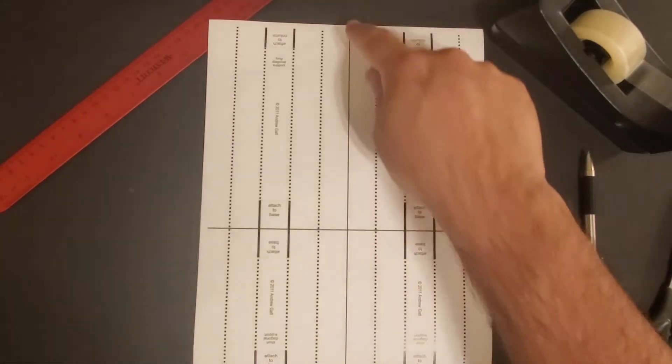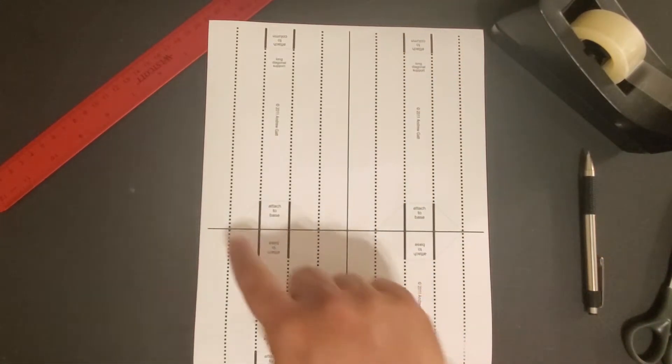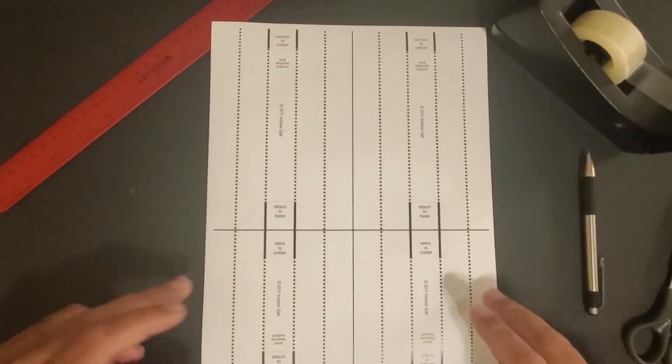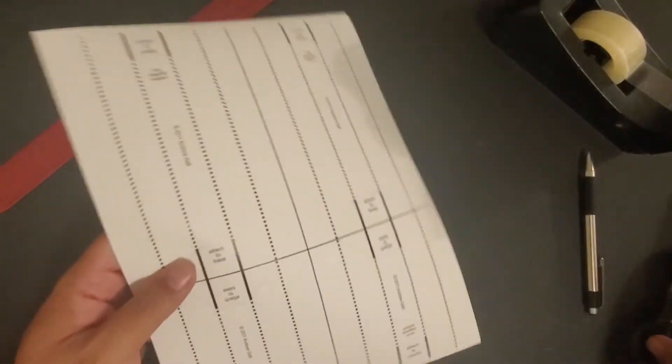Diagonal supports are going to start off with two cuts. So we're going to cut here and then cut here. That gives me my long diagonal supports and my short diagonal supports.